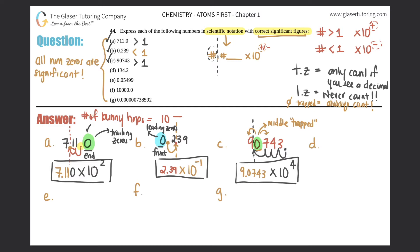Letter D: 134.2. We see the decimal. The new decimal for scientific notation goes right after the first number. How many bunny hops? One, two — times 10 to the second, positive because this number is greater than one. They're all non-zeros, so they all count: 1.342 times 10 to the second. There's your answer.